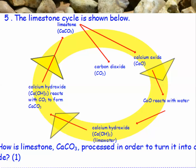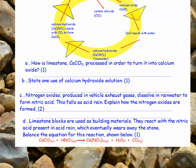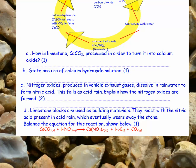The limestone cycle is shown below. How is limestone — calcium carbonate — processed in order to turn it into calcium oxide? Part B: state one use of calcium hydroxide solution. Part C: nitrogen oxides produced in vehicle exhaust gases dissolve in rainwater to form nitric acid, which falls as acid rain. Explain how the nitrogen oxides are formed. Two marks.